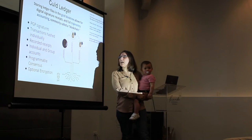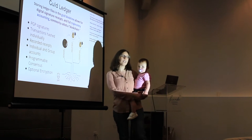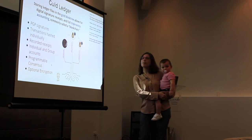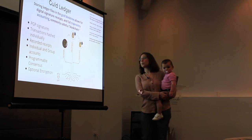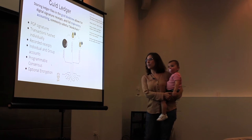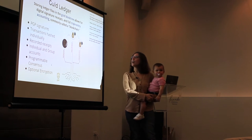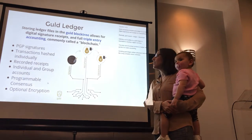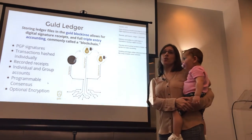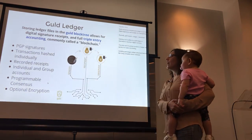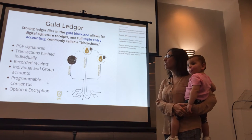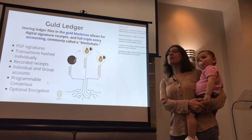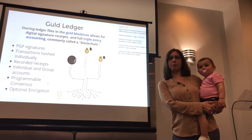A sender creates a transaction and signs the transaction. The recipient then takes the transaction, signs the receipt, and confirms the transaction is done. At this point, an observer can audit the transaction on the Gold Ledger — this is what makes the Gold Ledger the Gold Ledger. In order to do the signings, we use PGP, and it's something that everyone can observe from a public perspective.